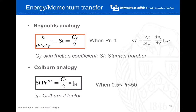Colburn studied the same problem with a wider range of Prandtl numbers and defined the Colburn j-factor. This equation can be applied over a wider range of Prandtl numbers, from 0.5 to 50.